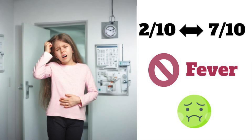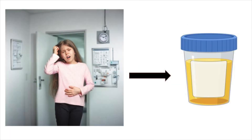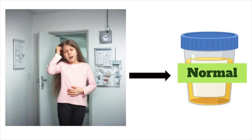She denied fevers but had many episodes of nausea. She had no prior past medical history including UTIs, and my abdominal exam revealed some slight lower quadrant tenderness but no peritoneal findings. I ordered a urinalysis thinking this was going to be fairly straightforward. Her urinalysis came back normal, so it was time to go back to the drawing board.